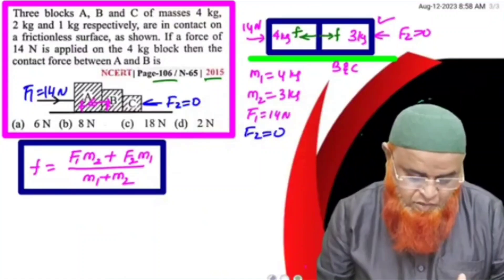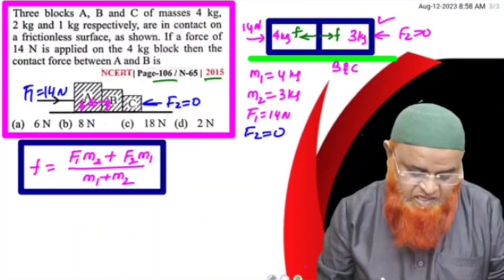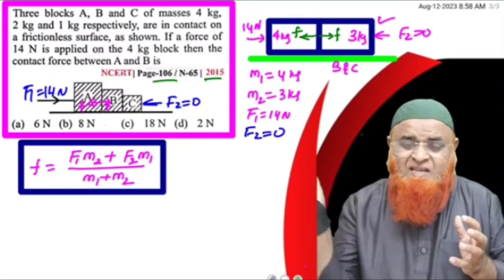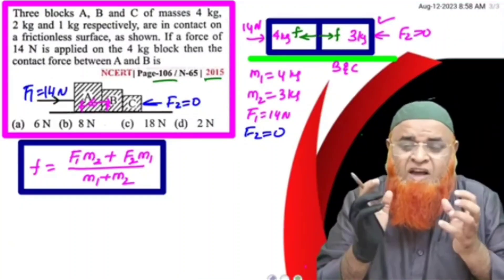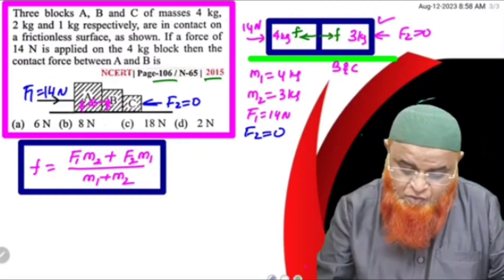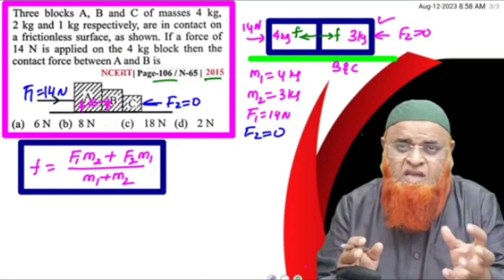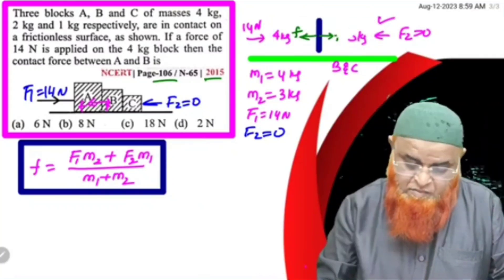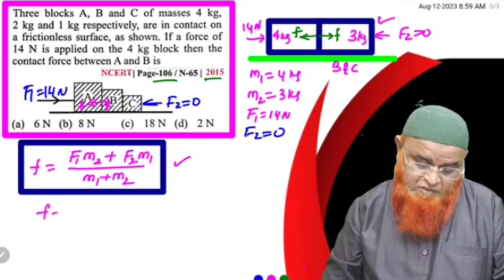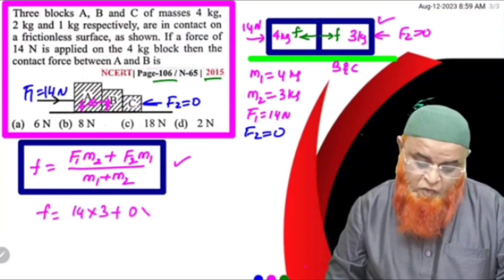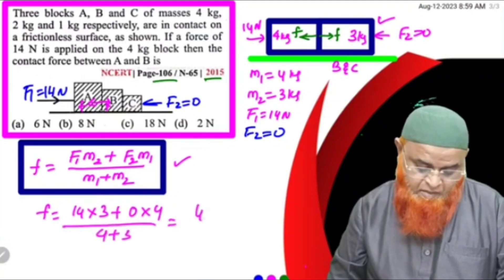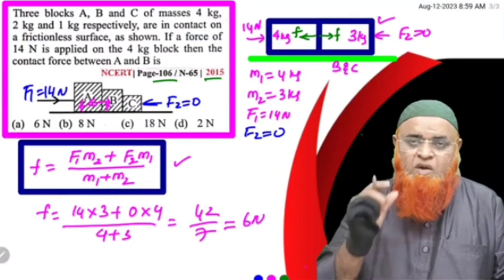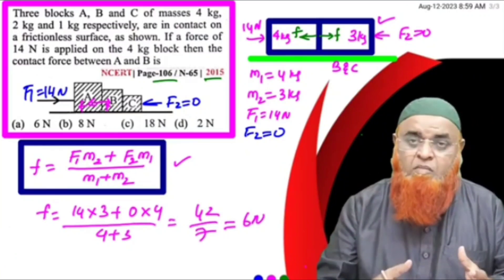My dear students, how can you solve this problem asked in NEET 2015? This concept is in NCERT page 106. It asks for the contact force between A and B when 14 Newtons acts on one side. Treating B and C together as 3 kg, the contact force f = (14×3 + 0×4)/(4+3) = 42/7 = 6 Newtons. You can solve this in one step without pen and paper.